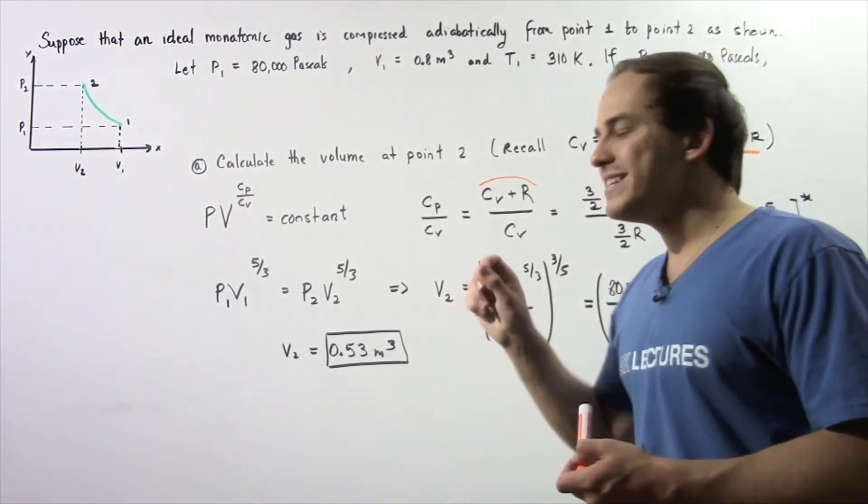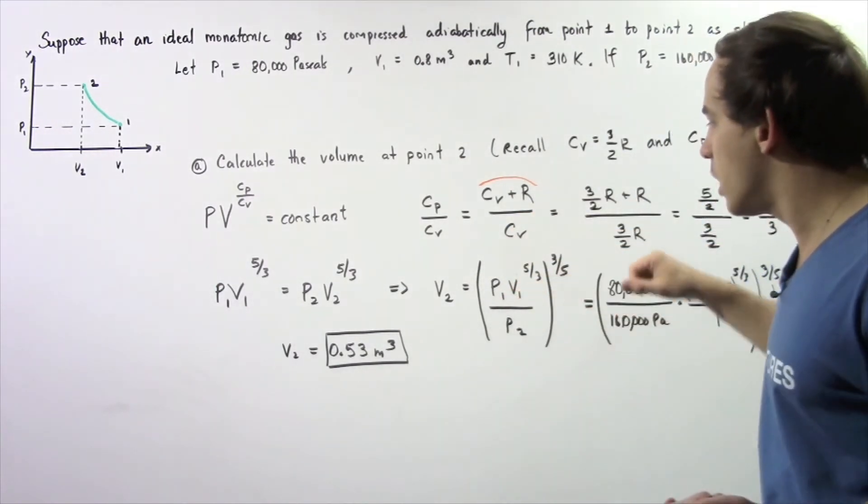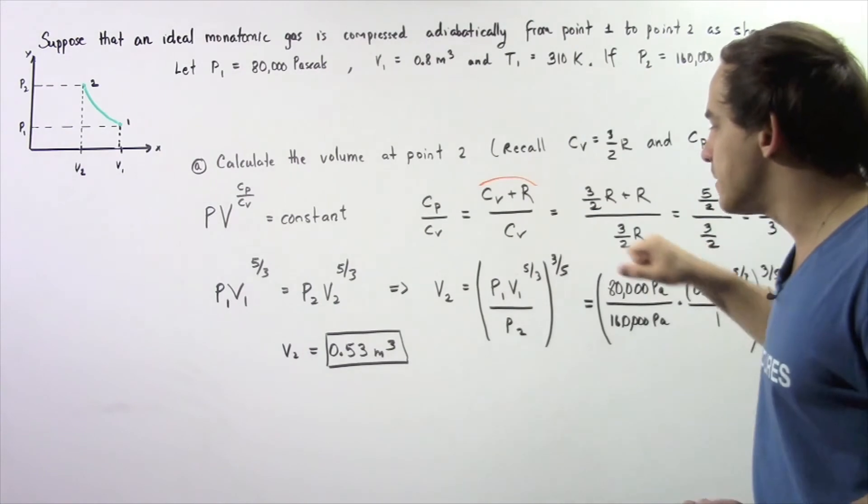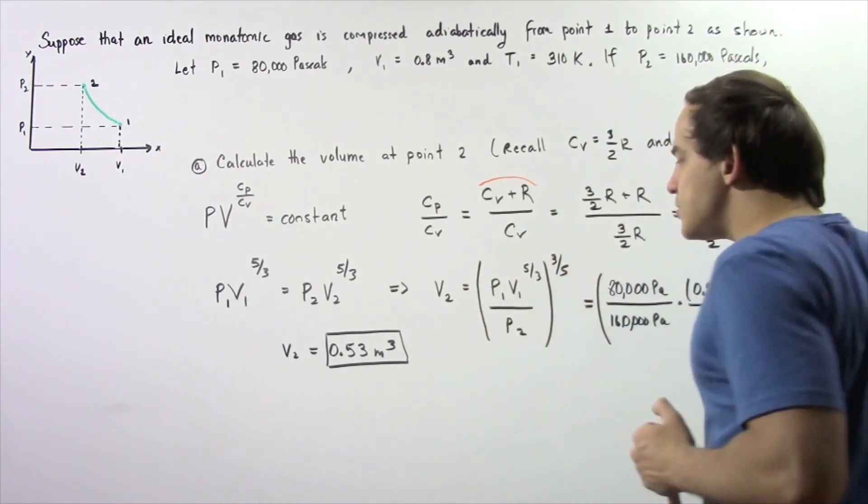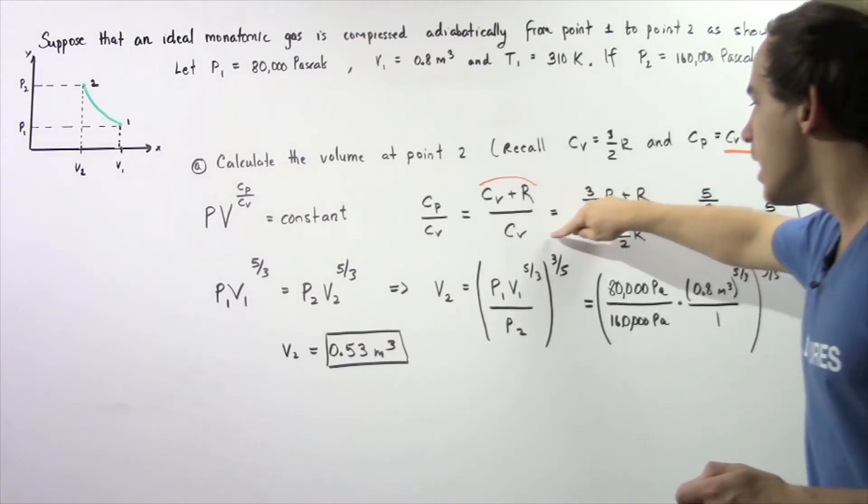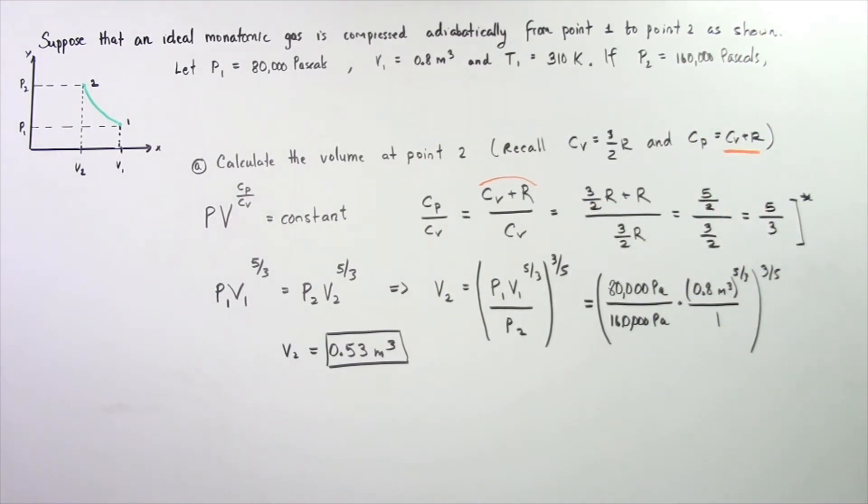We get V2 equals (P1 × V1^(5/3))/P2, and this entire ratio is raised to the power of 3/5. So we plug in our known values.